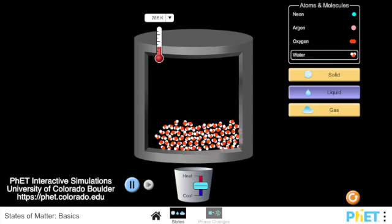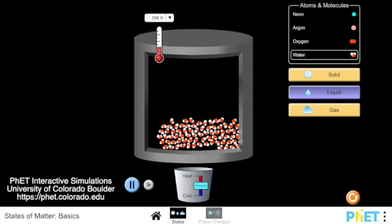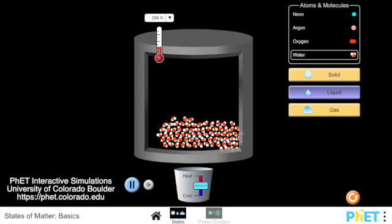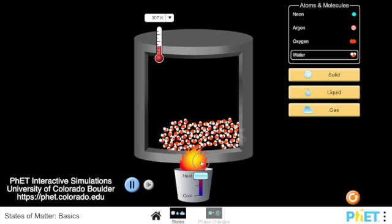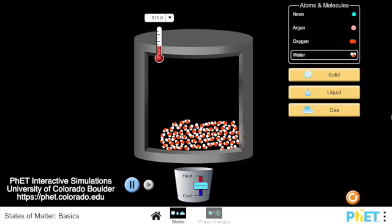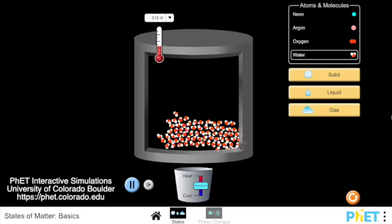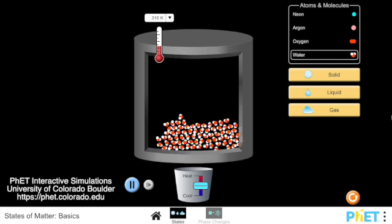In this simulation from PhET, we see many water molecules in liquid form. The average amount of energy in the liquid as a whole is represented by the temperature. Temperature is just a measure of the average thermal energy in a substance. However, there is a lot of variation in energy between the molecules. Notice how some of the molecules are spinning very fast while others are moving more slowly.